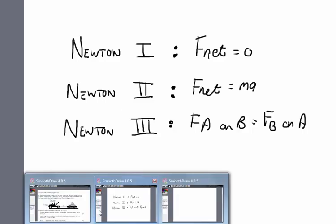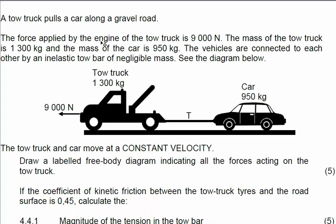Now, we need to know the theory, we need to know these laws off by heart. But the difficult part comes in when we have to do calculations and figure out which law we need to use. So I have an example here from an old question paper that says a tow truck pulls a car along a gravel road. The force applied by the engine of the tow truck is 9,000 newton. The mass of the tow truck is 1,300 kilograms and the mass of the car is 950 kilograms. The vehicles are connected to each other by an inelastic tow bar of negligible mass. Now, the important part is here just under our picture.